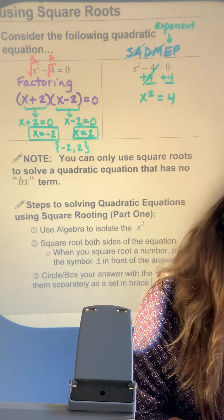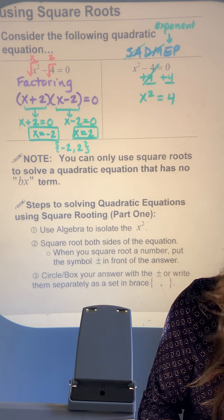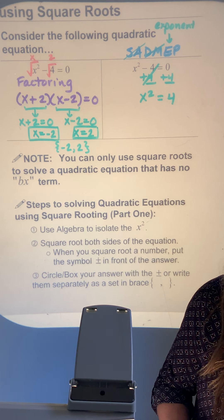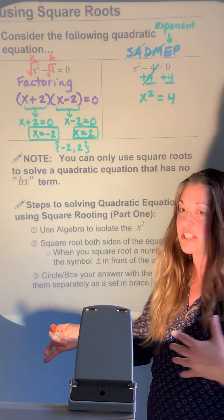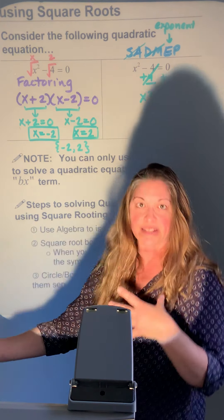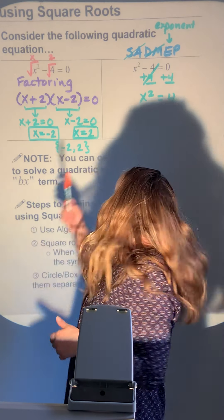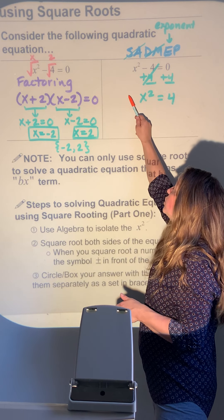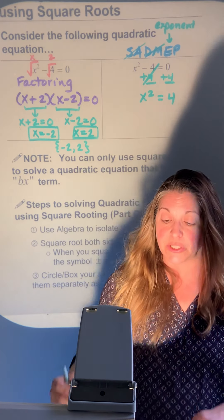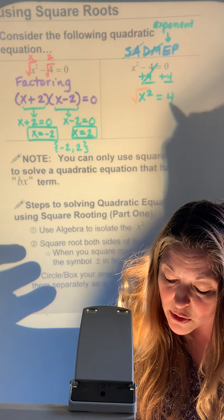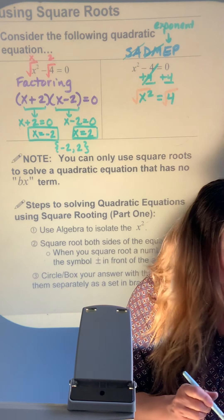The question is: how do you undo a squaring? We talked about inverse operations — if you've got plus, you subtract; if you've got times, you divide. If you have something being squared, you square root. So we're going to square root both sides of the equation.